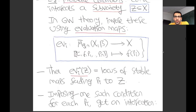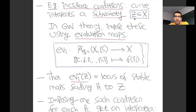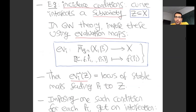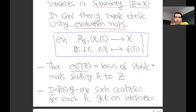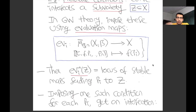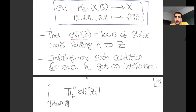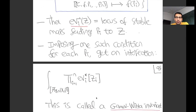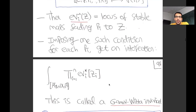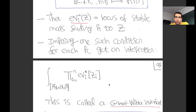Given these evaluation maps, if I have some chosen sub-variety of my target, I can take the pre-image, which is literally the locus of stable maps sending P_i to Z. That defines a sub-variety of the moduli space. We can impose one such condition on each marking and form the intersection—cohomologically this is given by an integral of the pullback classes. This gives you a number called a Gromov-Witten invariant: it's a count of curves satisfying some conditions, though you have to be careful what you mean by curve in this context, since stable maps can look very different from embedded curves.